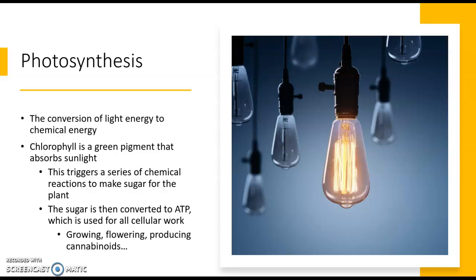Photosynthesis — we could spend a whole semester on this, but we'll just talk briefly about the process. Photosynthesis happens in plants, some bacteria, and some protist algae. It is the conversion of light energy to chemical energy. The first organisms to evolve to do photosynthesis did so millions and millions of years ago, and one of the byproducts of this process is oxygen — providing the oxygen in the atmosphere that allowed for greater biodiversity and eventually the evolution of animals.